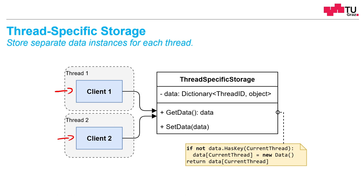Thread-specific storage solves this by having a data instance which stores an object for each thread ID. It's important to let the client only access this data instance via special methods for getting and setting the data. These special methods have to access this data dictionary and return the correct instance for the current calling thread.